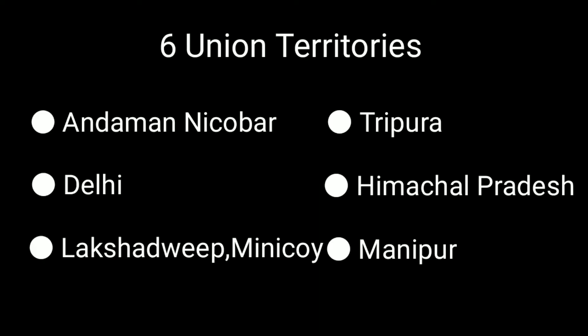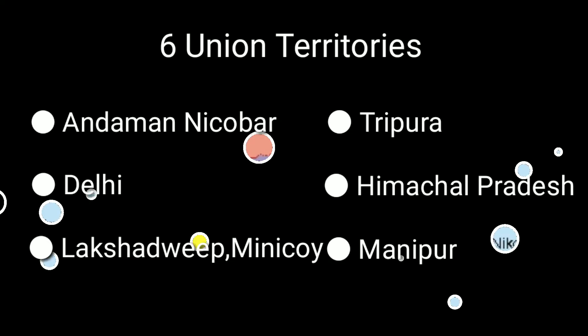The 6 Union Territories are: Andaman and Nicobar Islands, Delhi, Lakshadweep and Minicoy, Tripura, Himachal Pradesh, and Manipur.